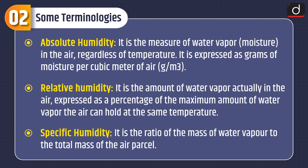Relative humidity is the amount of water vapor actually in the air, expressed as a percentage of the maximum amount of water vapor the air can hold at the same temperature. Specific humidity is the ratio of the mass of water vapor to the total mass of the air parcel.